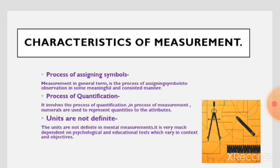Next is the characteristics of measurement. The first characteristic is the process of assigning symbols — how we assign symbols, that process is called measurement. The second is the process of quantification — it involves the process of quantification in the process of measurement.